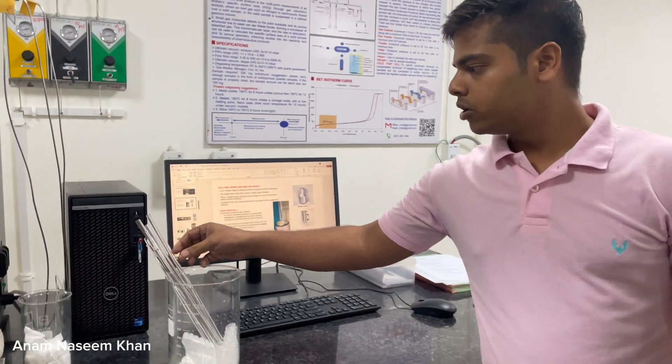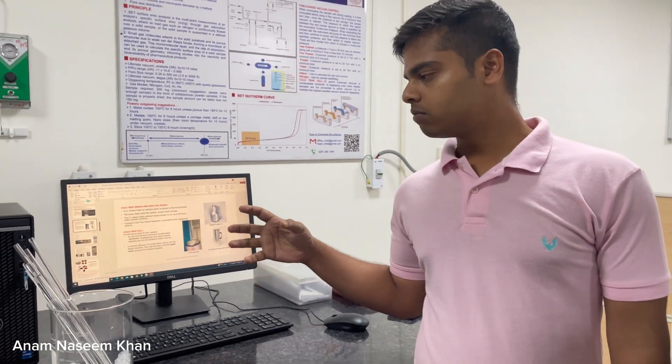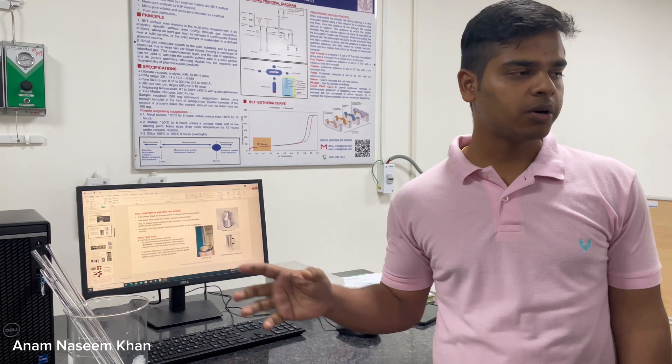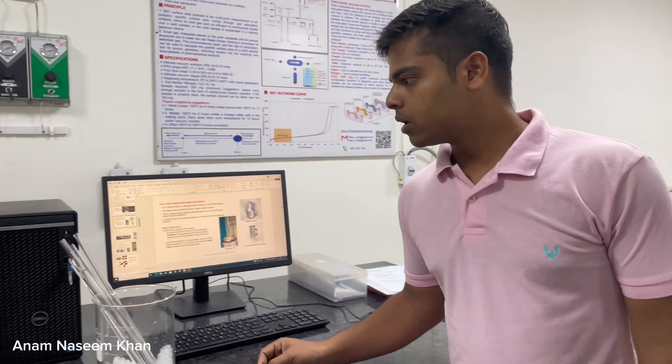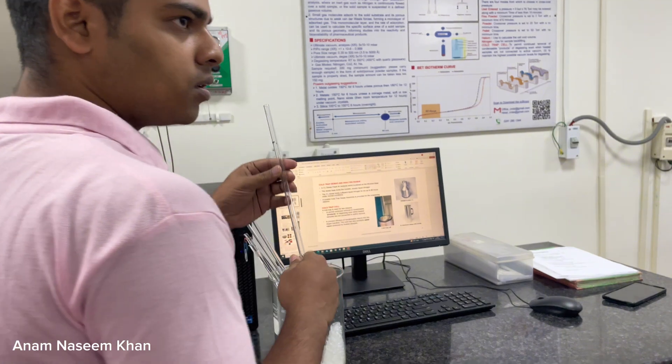You must use a properly dried sample, and then you have to weigh it three times. Weight is very crucial for the measurement of surface area and pore size. After that, you put your sample into the sample rod.